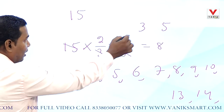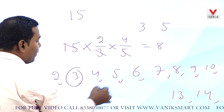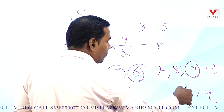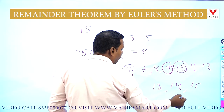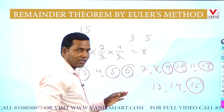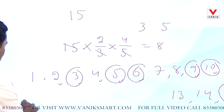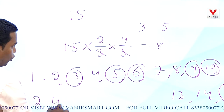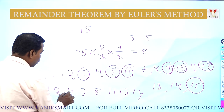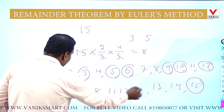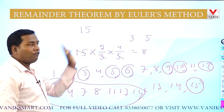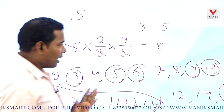For example: 3 is divisible by 3, 5 is divisible by 5, 6 is divisible by 3, 9 is divisible by 3, 10 is divisible by 5, 12 is divisible by 3, and 15 is divisible by 5. The remaining numbers are 1, 2, 4, 7, 8, 11, 13, 14 — that's 8 numbers. These 8 numbers are the Euler's number of 15.